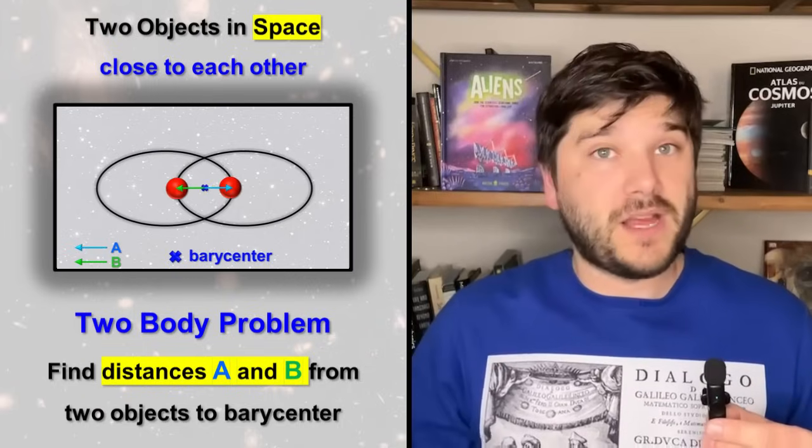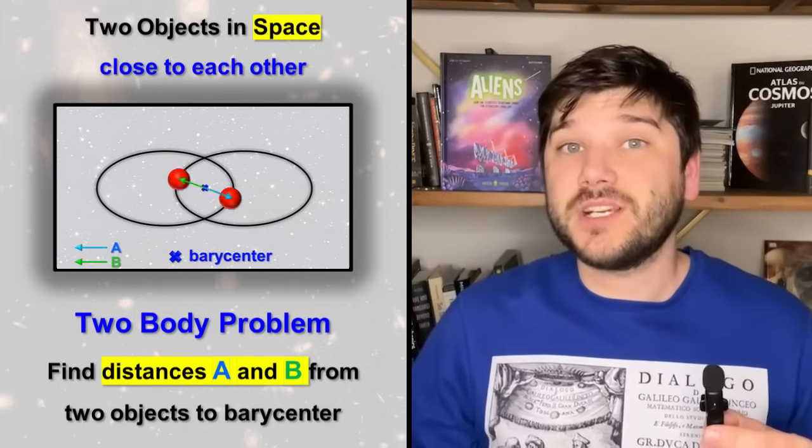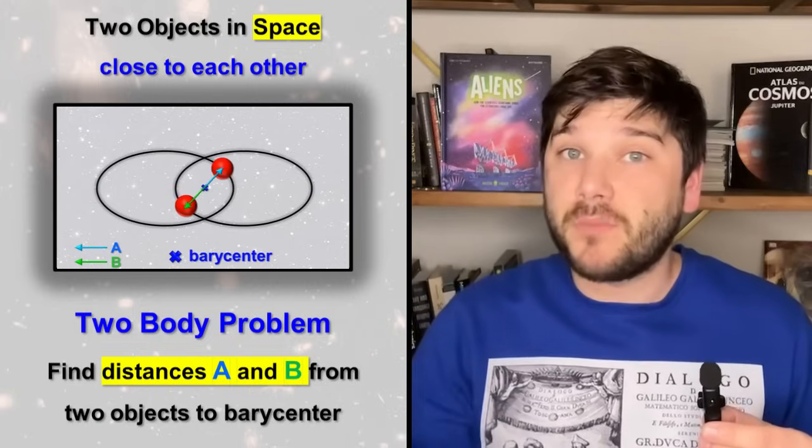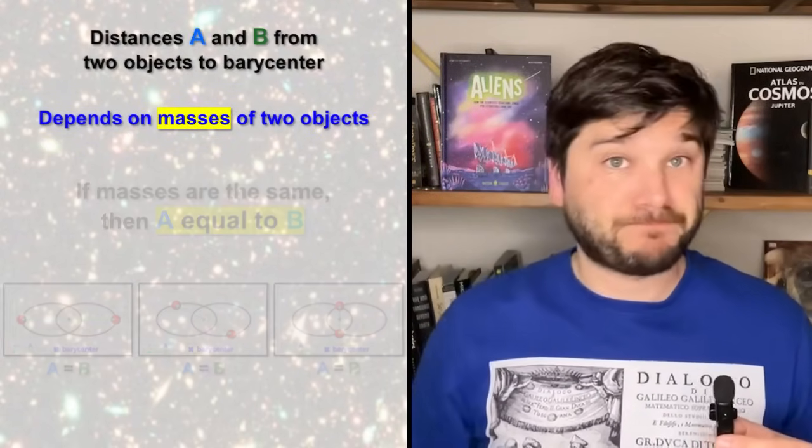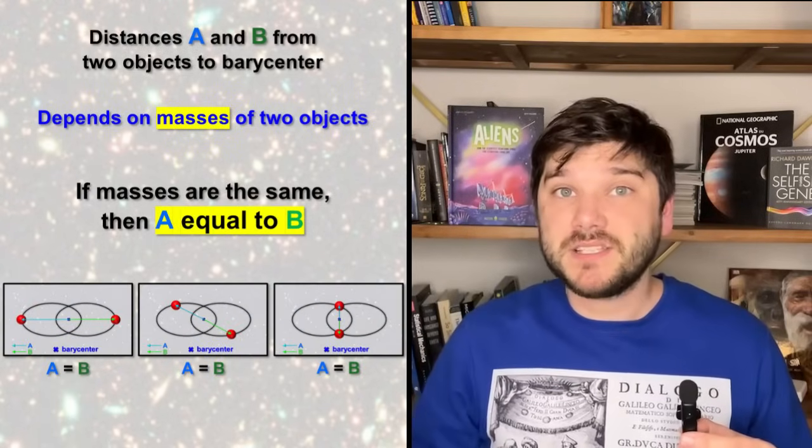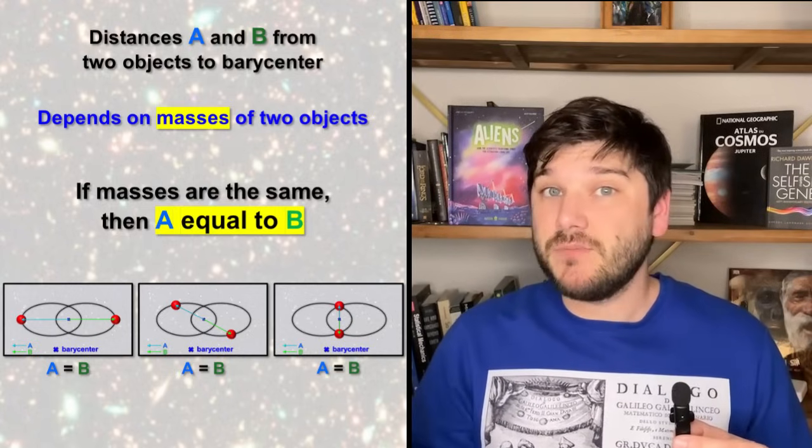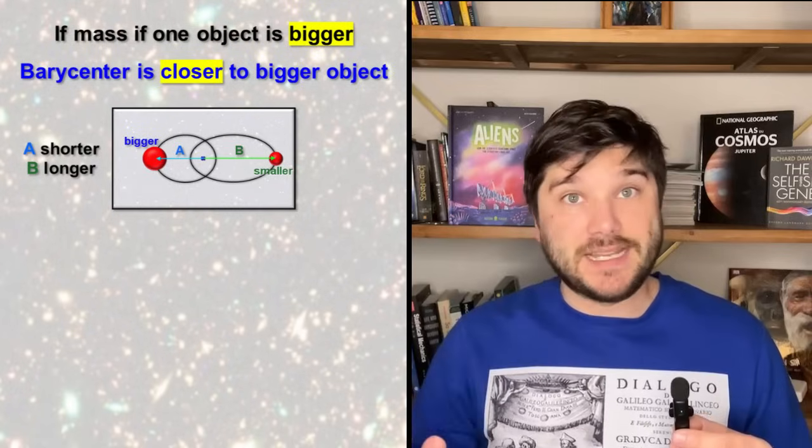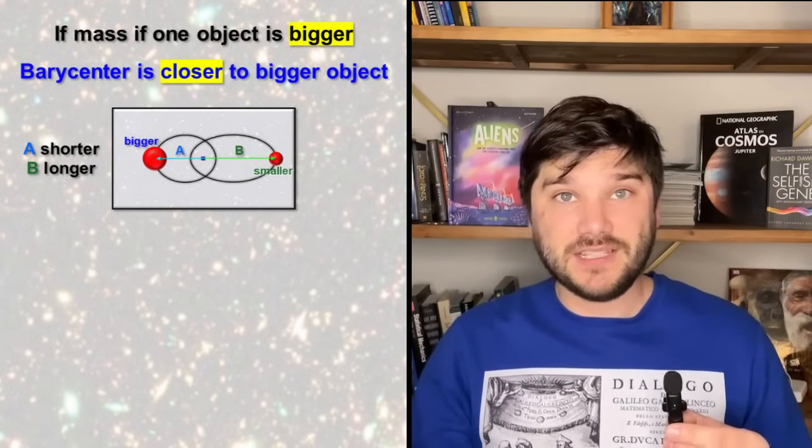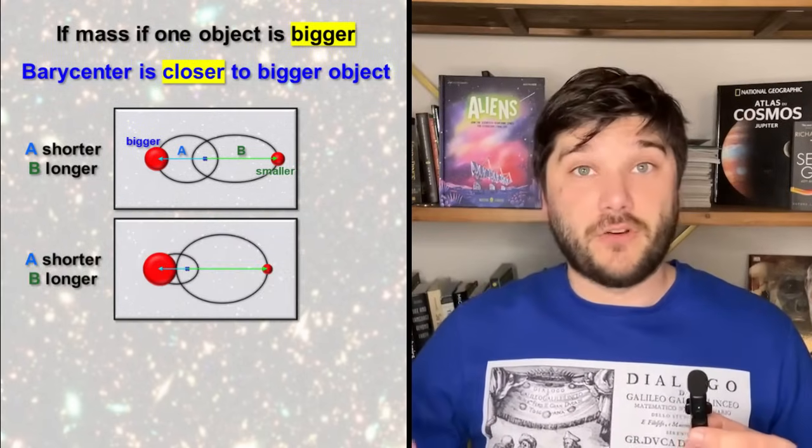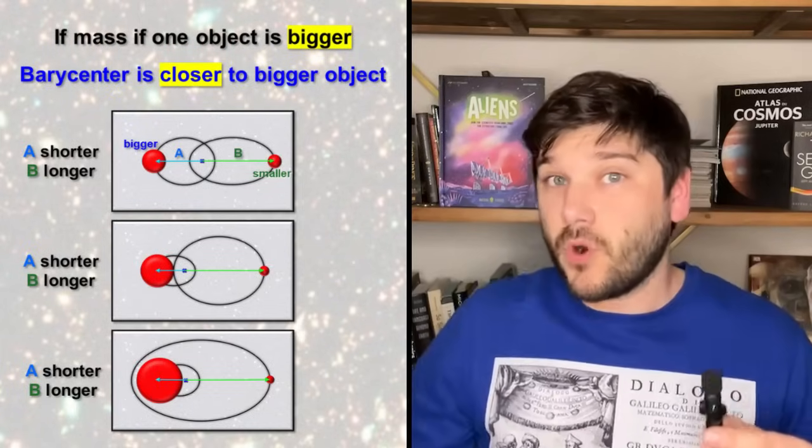The main goal of Two-Body Problem is to find the distance A and B of two objects centers to barycenter at each moment of time. These distances depend mainly on two body masses. If they have the same masses, the distances A and B are always equal. But if the mass of one object is bigger than another, then the barycenter is located closer to the bigger object. Therefore, distance A is always shorter than distance B.